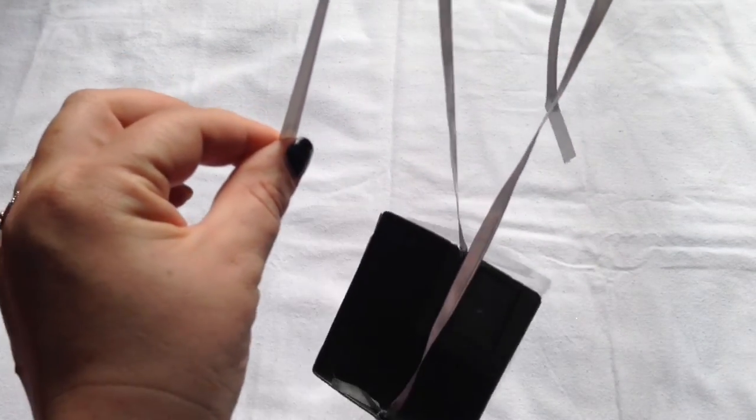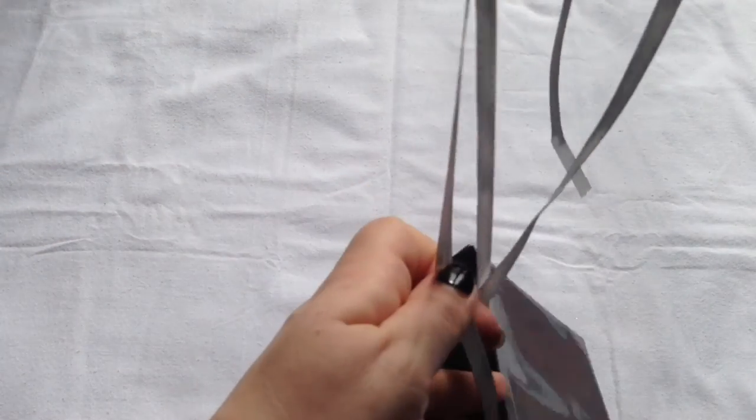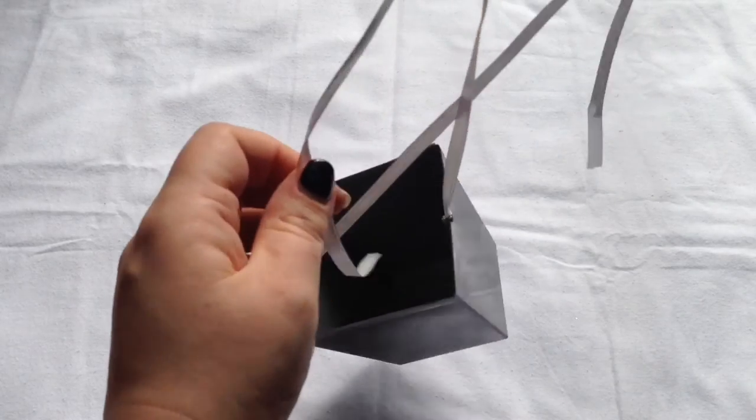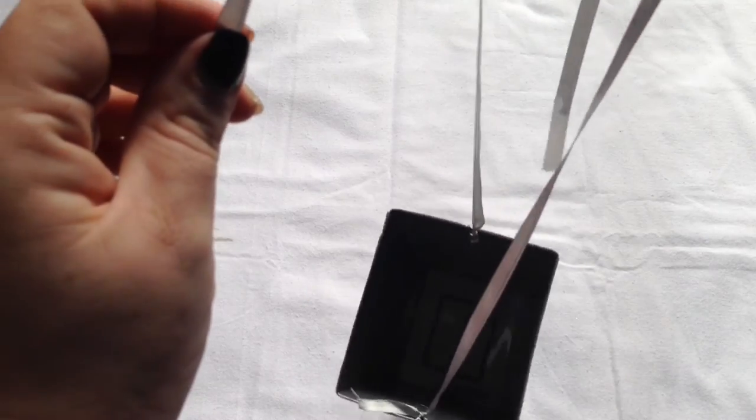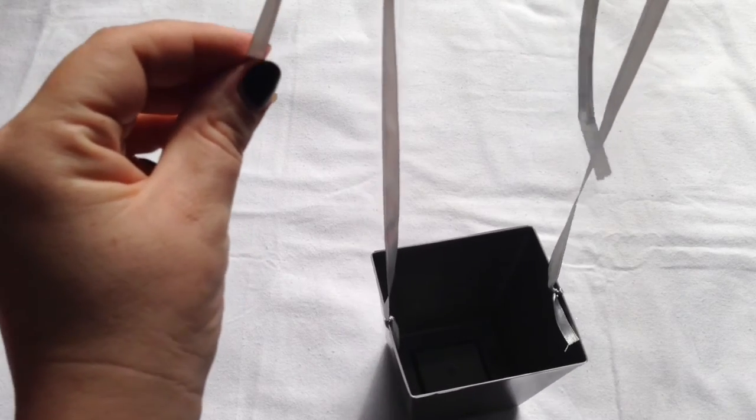And I just double knotted mine, and then you want to hold it up and make sure that you're getting it level so that it's not crooked. I found the easiest way was just to put the box on the ground or the table and then sort of level it out from there.